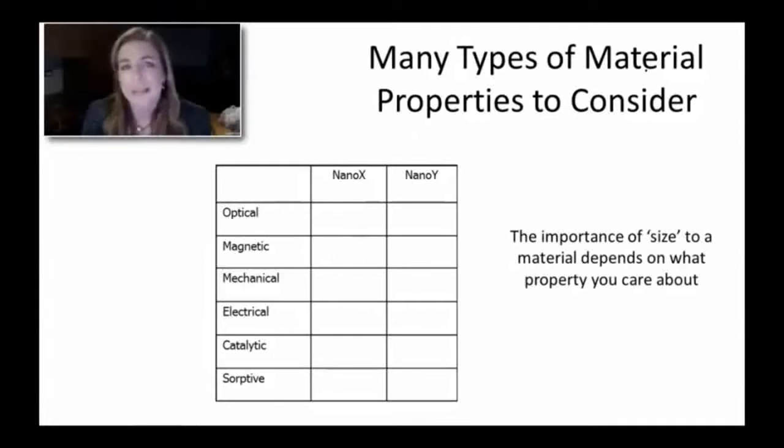You can have optical, magnetic, mechanical, chemical properties. And the size at which you see a drastic change in the behavior of a material will be very dependent on the property you're looking at.